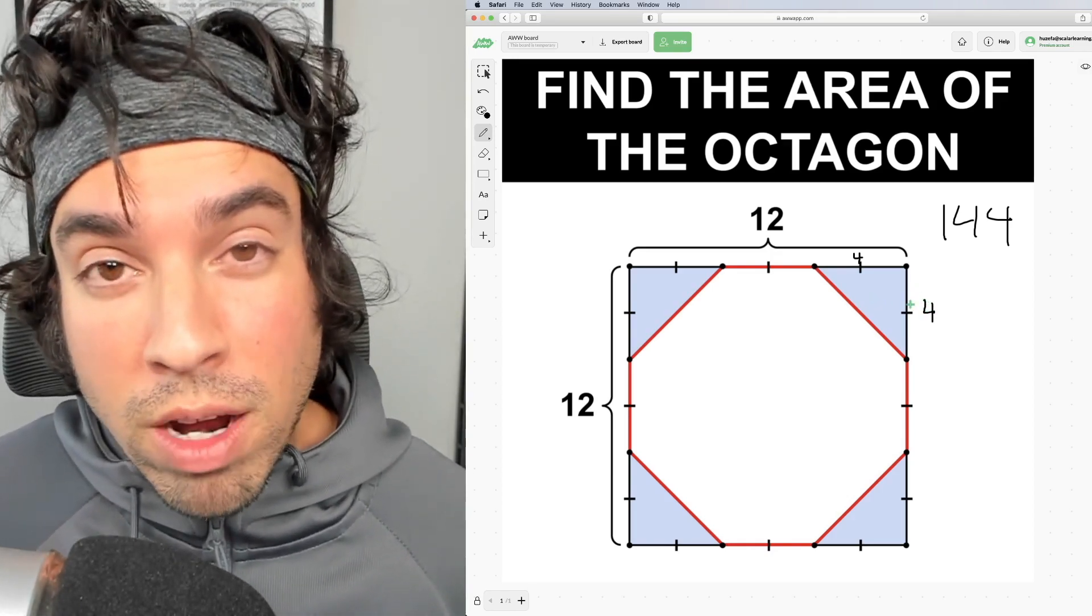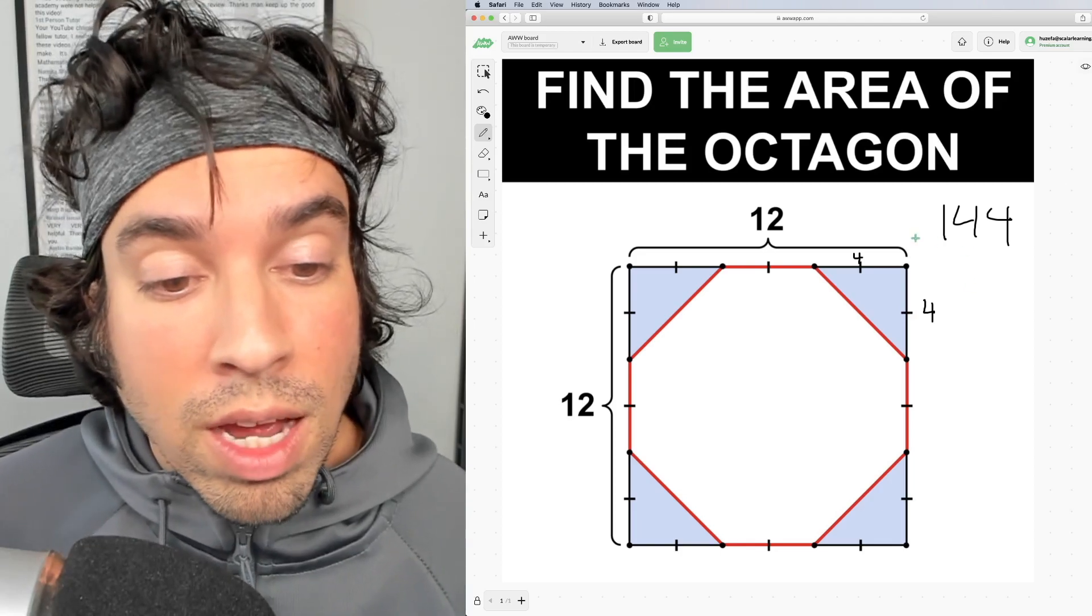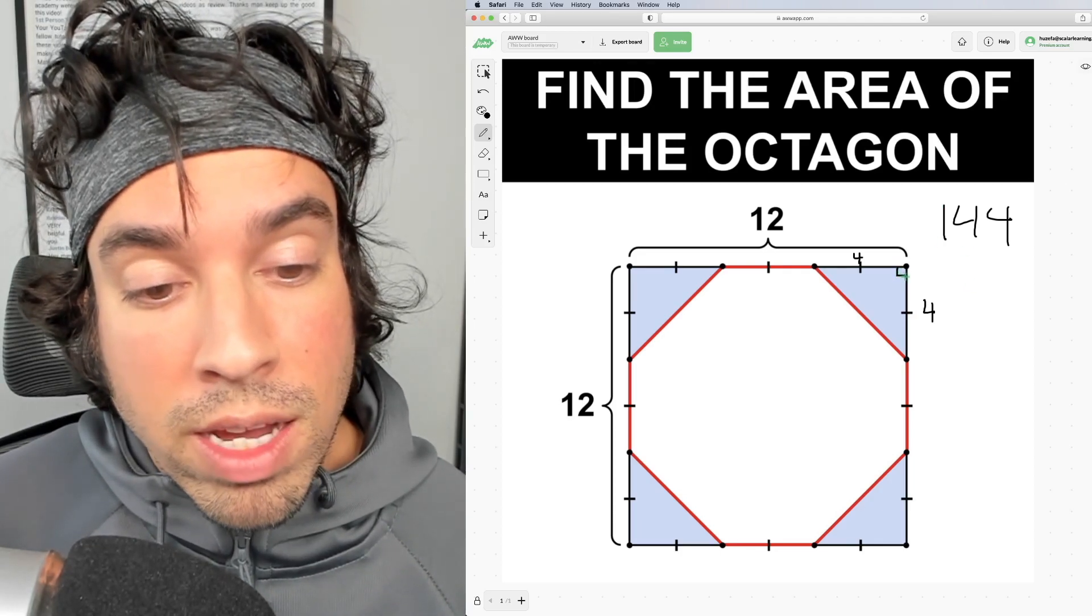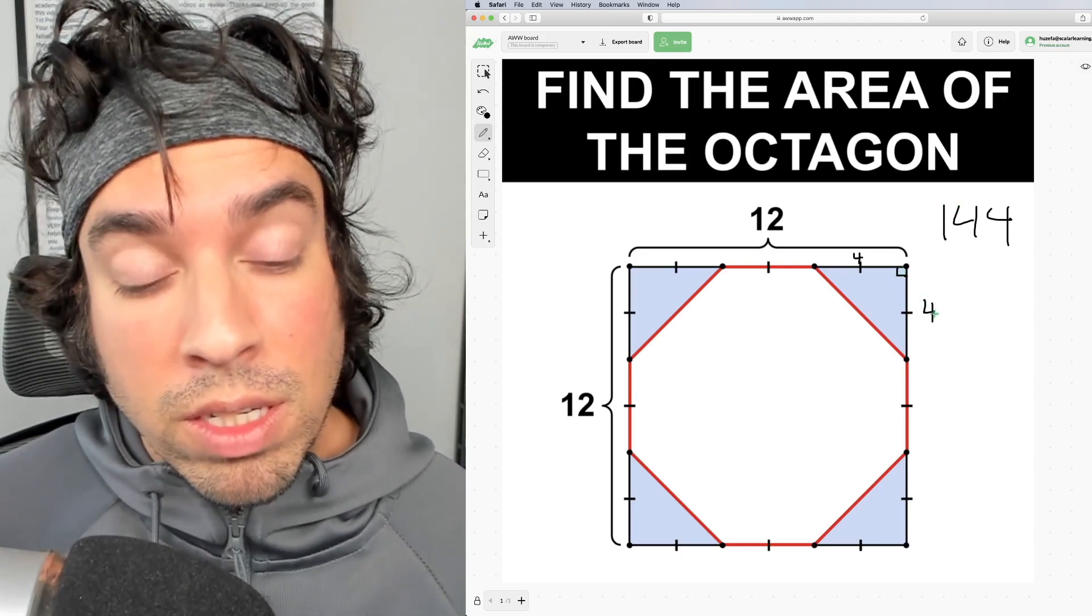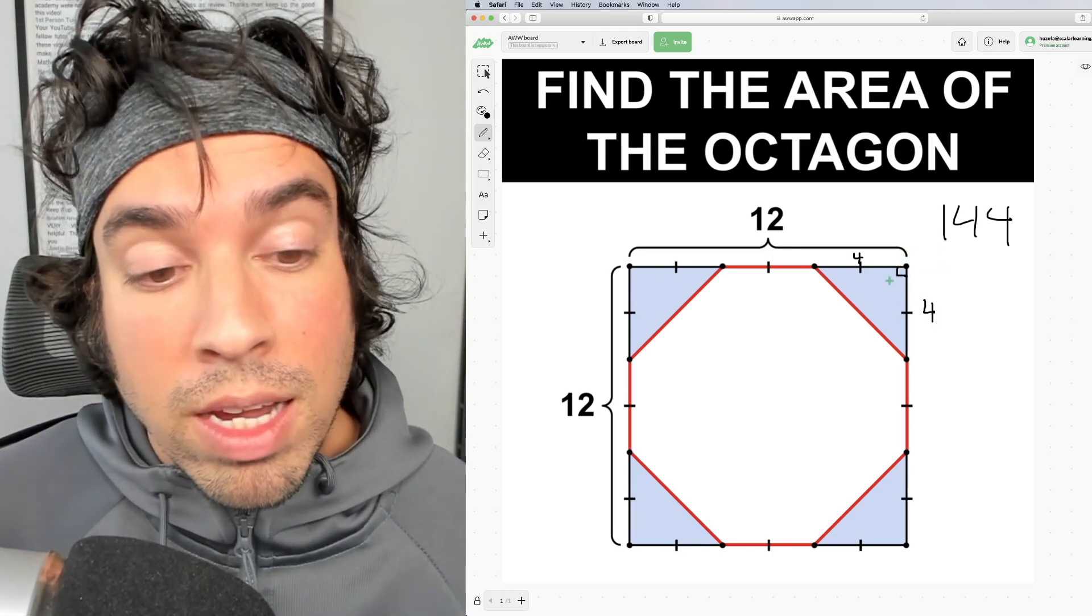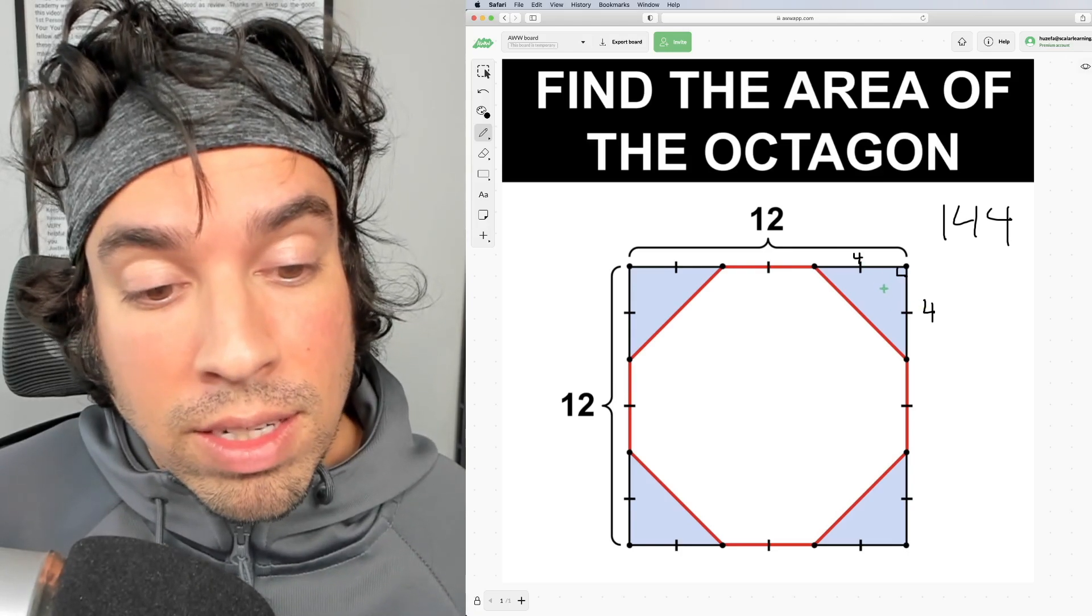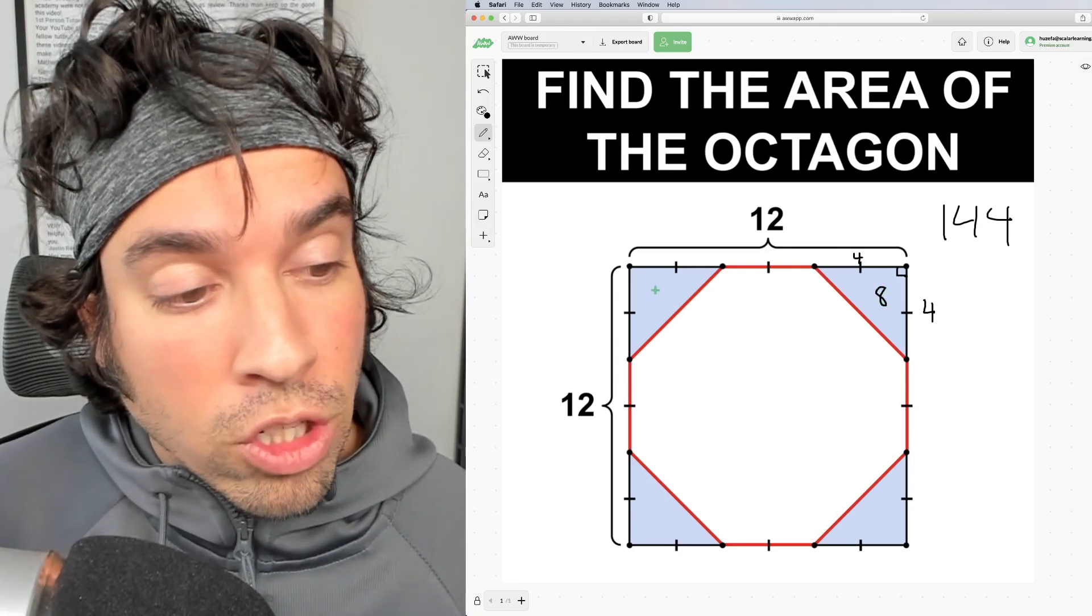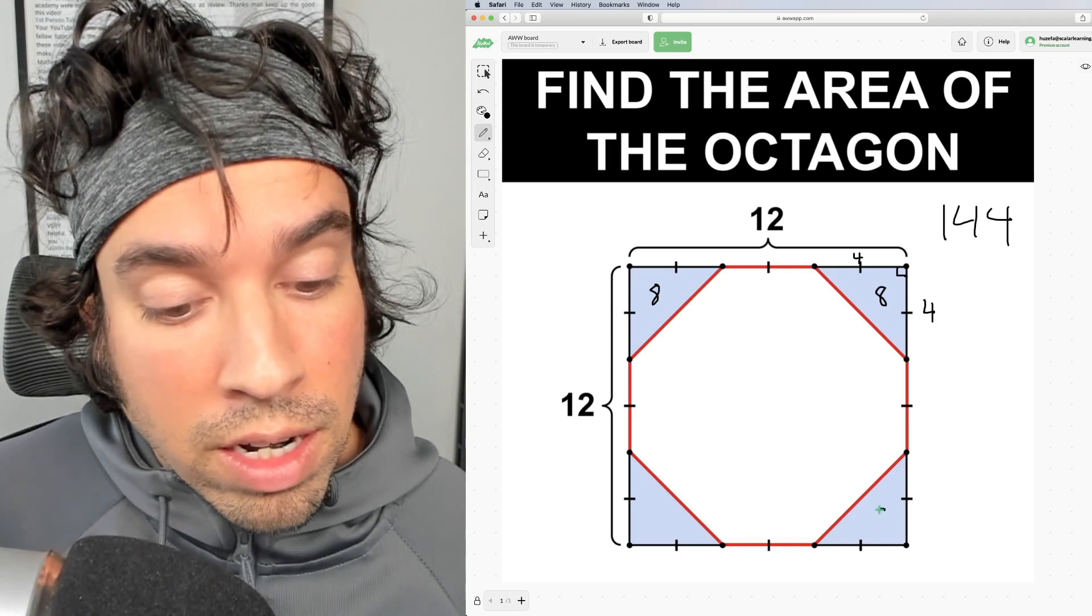The way we calculate the area of a triangle is we multiply the two sides that form the right angle, the two legs. Four times four is 16, then we take half of that value. If you remember, it's one-half base times height. So half of 16 is eight. Each of these triangles has an area of eight.